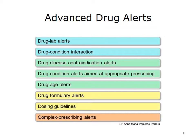Drug age alerts are generated to discourage prescribing of a certain drug in the elderly or in children. Drug formulary alerts are generated to notify the prescriber that a particular brand or drug is neither included nor recommended in the formulary of the prescribing location. Dosing guidelines are alerts that take into account complex patient characteristics such as age, renal and liver function, pregnancy or female of child-bearing potential, pediatric weight-based dosing, drug utilization restrictions, or clinical indication. Finally, complex prescribing alerts are generated with combined features of basic and advanced alerts.